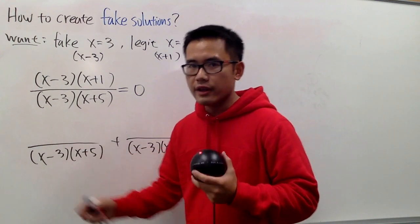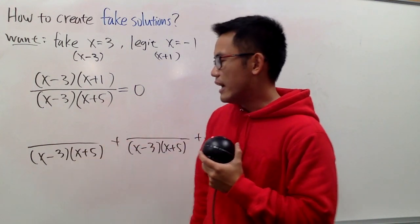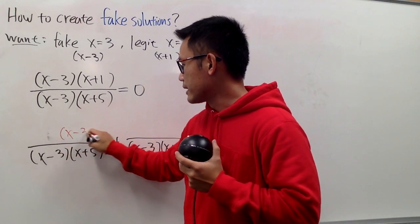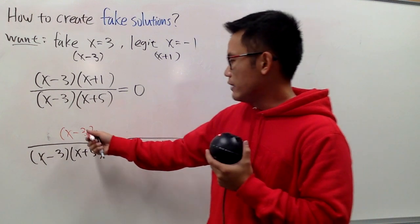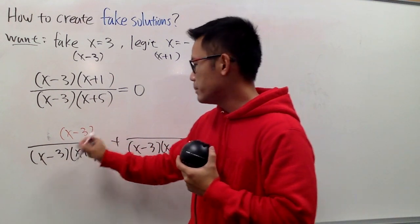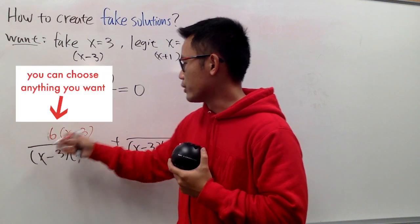Now, for the first fraction, I want to get rid of the x minus 3, so I will have the x minus 3 like this. And if I just have x minus 3, they cancel out, it's 1, it's boring. So let me put down another number that says 6 multiplied by that.